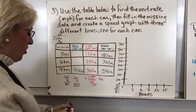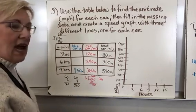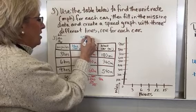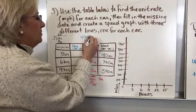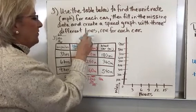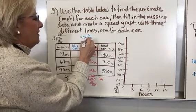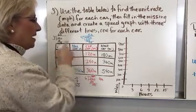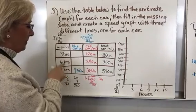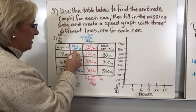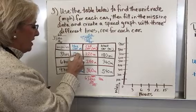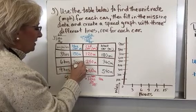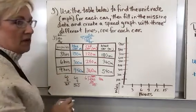For the blue car, in nine hours it has gone 450 miles. So nine goes into 450: nine goes into 45 exactly five times, giving 50. The blue car is going 50 miles per hour. So 50 times three is 150 miles in three hours, 50 times six is 300 miles in six hours, and in nine hours it will go 450 miles.